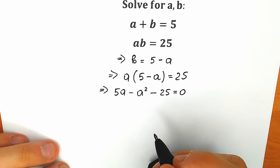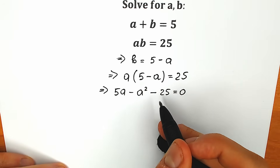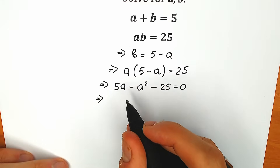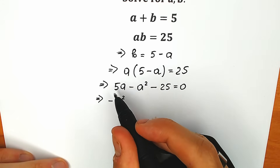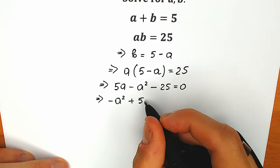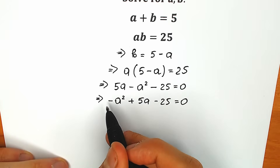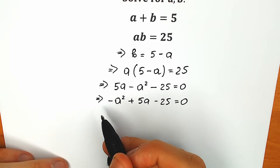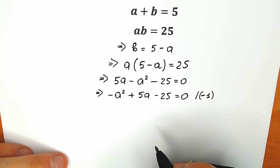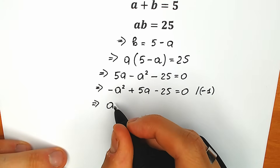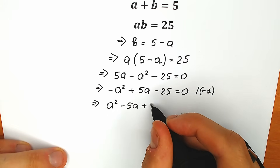Right now let's change the order a little bit, because everyone prefers a squared term first, then the x term, then the constant. So let's write minus a squared on the first position, then plus 5a, and of course minus 25. And the last tricky moment — because we don't like this negative sign, we're going to multiply both sides by minus 1. As a result, our final quadratic equation is a squared minus 5a plus 25 equals zero.